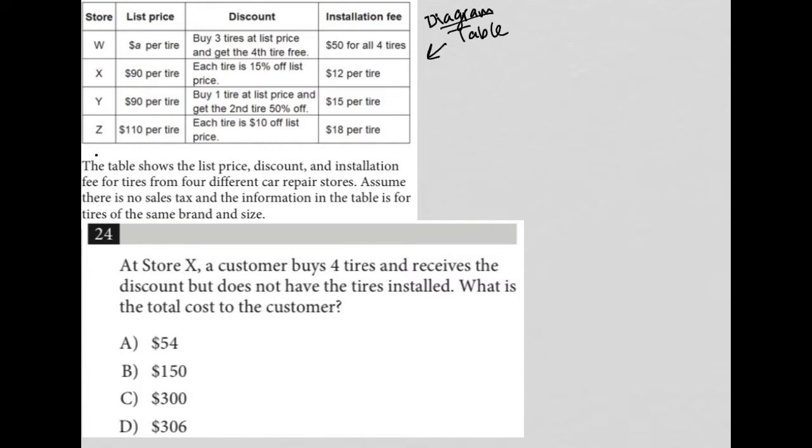The table shows the list price, discount, and installation fee for tires from four different car repair stores. Assume there is no sales tax, and the information in the table is for tires of the same brand and size.